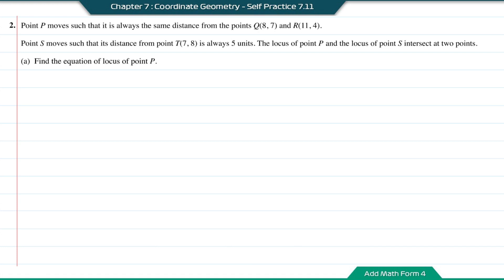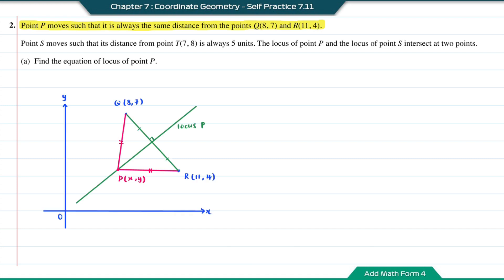Question number 2. Point P moves such that it is always the same distance from point Q(8,7) and R(11,4). Point S moves such that its distance from point T(7,8) is always 5 units. The locus of point P and the locus of point S intersect at two points. Part A: find the equation of the locus of point P. The locus of P will be a straight line which is the perpendicular bisector of line RQ.